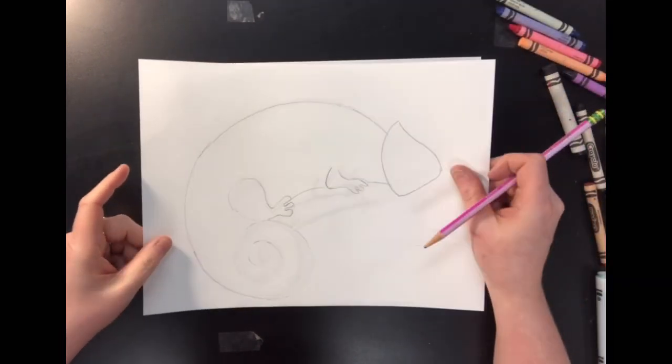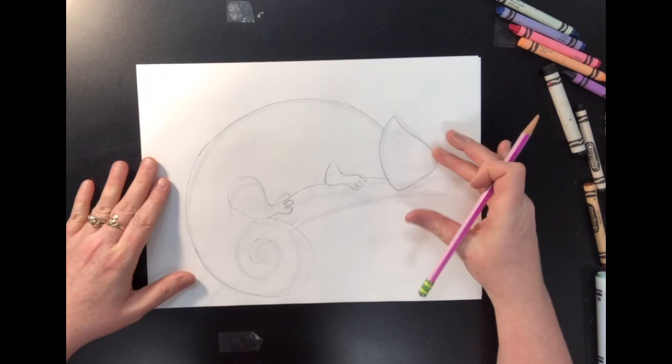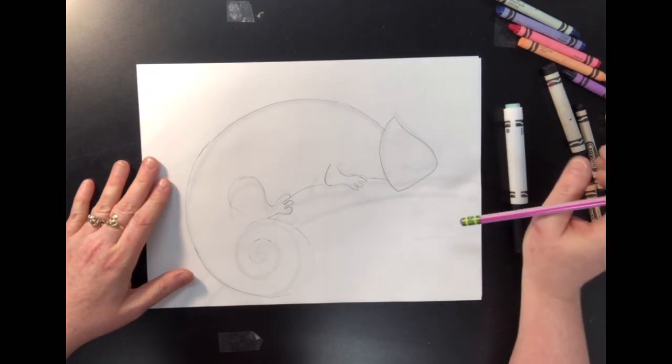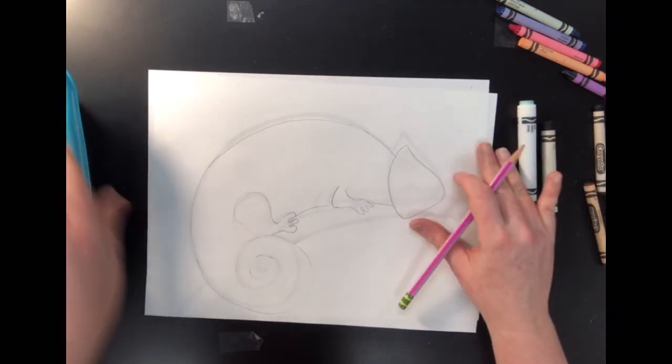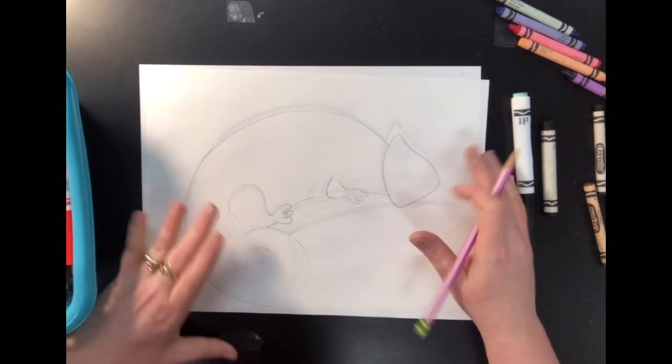We're going to start by making sure we have a pencil and a paper. You're going to need a black marker or a black crayon, something for outlining. And then markers and crayons are going to be your best friend again for this project.